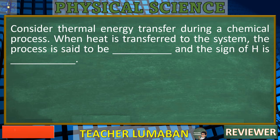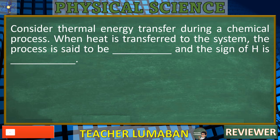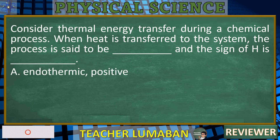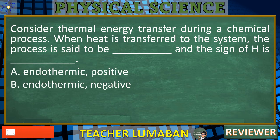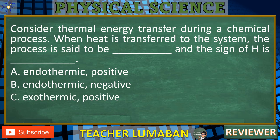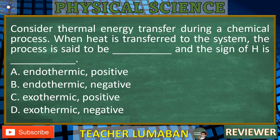Consider thermal energy transfer during a chemical process. When heat is transferred to the system, the process is said to be blank, and the sign of delta H is blank. A. Endothermic, positive. B. Endothermic, negative. C. Exothermic, positive. D. Exothermic, negative. In the next 5 seconds, select the best response from the available options.